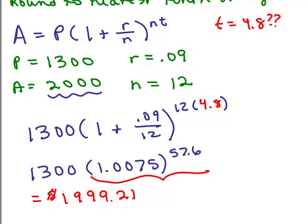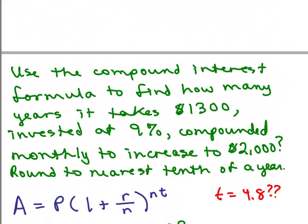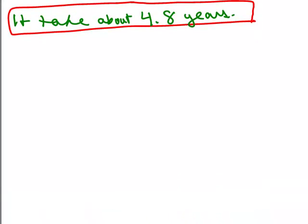Well, that's not exactly $2,000. We want to see if it's about $2,000, and of course it's not going to be because this 4.8 was rounded. But it checks because that's pretty darn close. So we must have, when we rounded, we rounded under a little bit. So that's why when we plugged it in, we got a little bit smaller number. So now we verify that that does make sense, about 4.8 years. So it takes about 4.8 years was the answer to this problem.